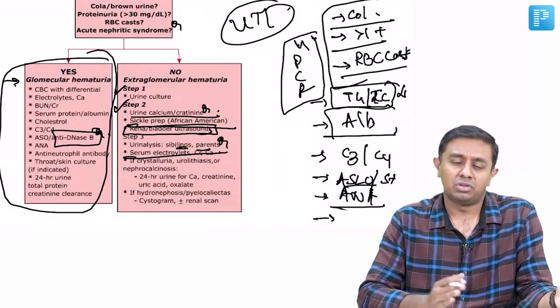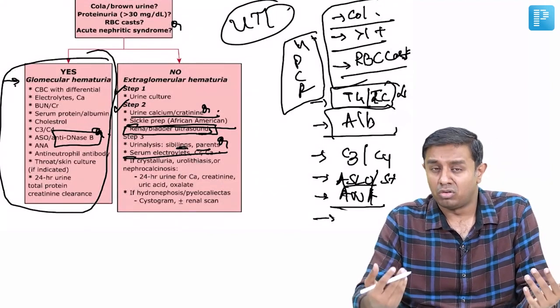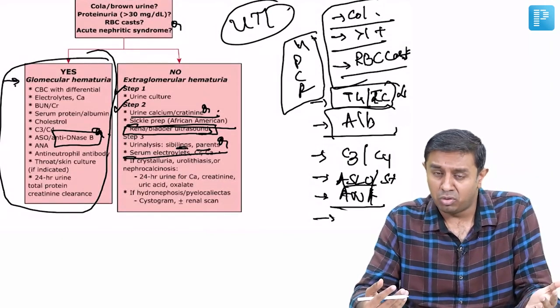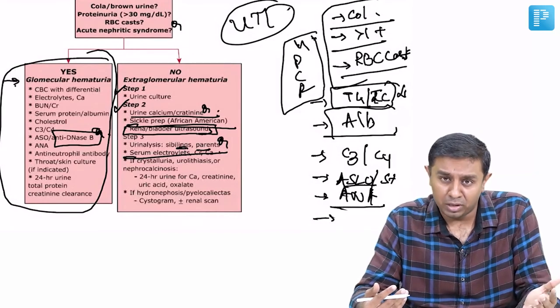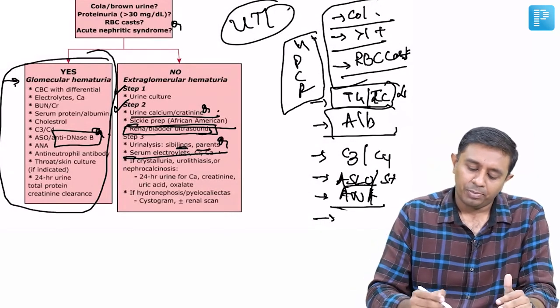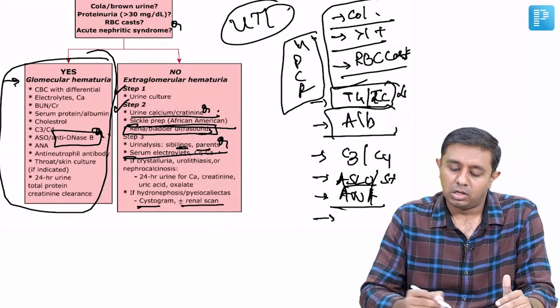And the ultrasound was suggestive of any hydronephrosis or obstructive nephropathy or obstructive uropathy as the causes of hematuria, definitely a VCUG or renal scan should be done.